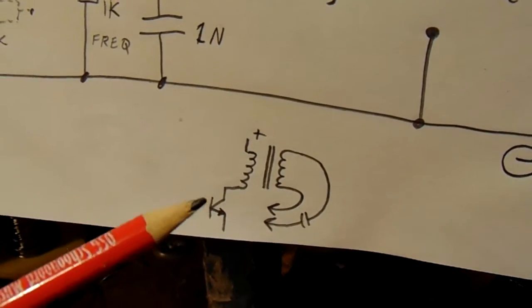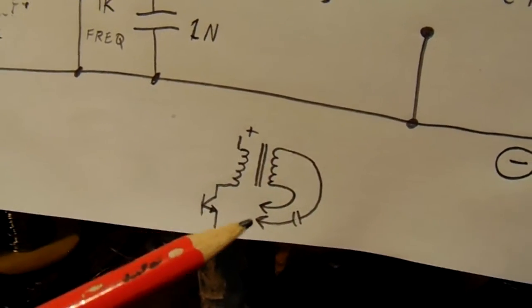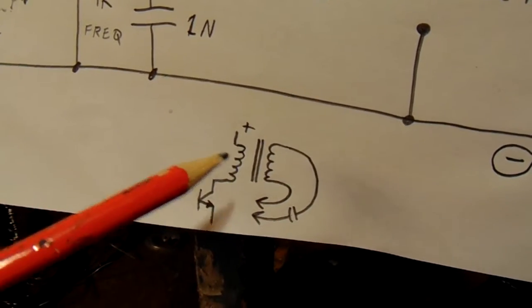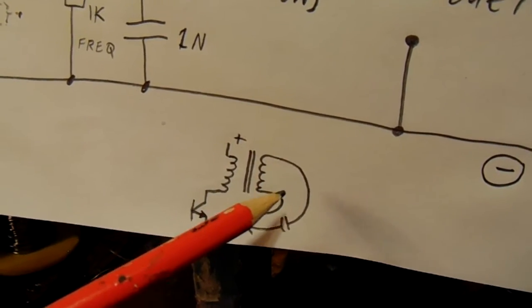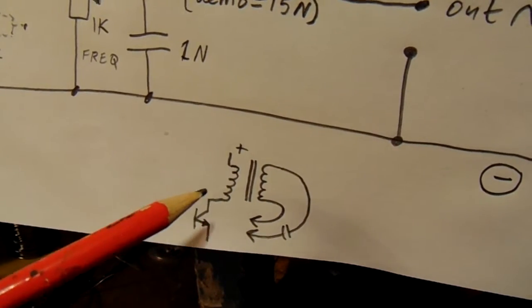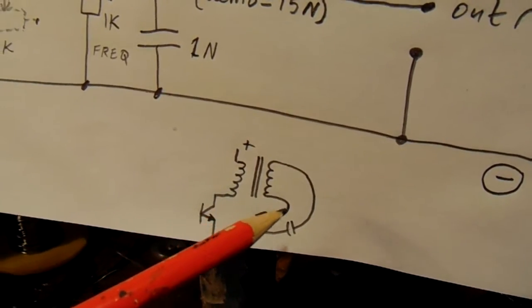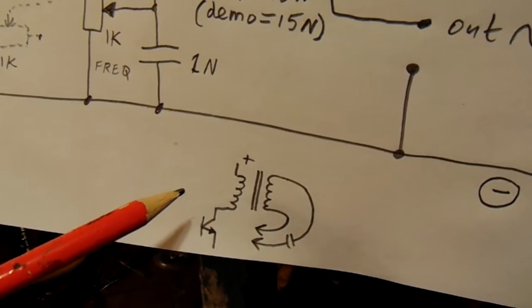Here we have the transistor, and the reason is that on the secondary winding the signal is out of phase. It has an opposite phase compared to the primary.